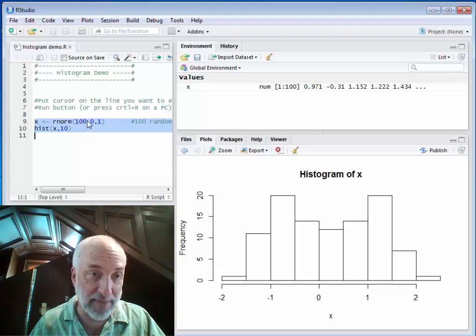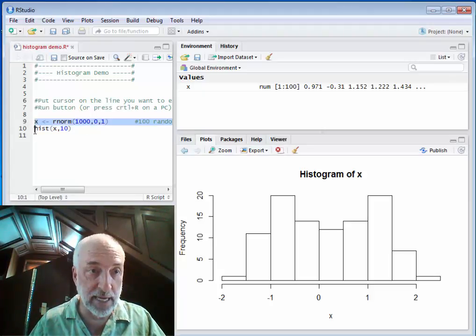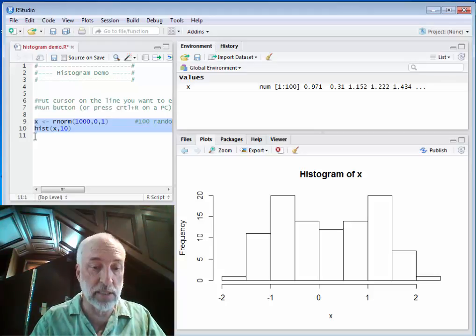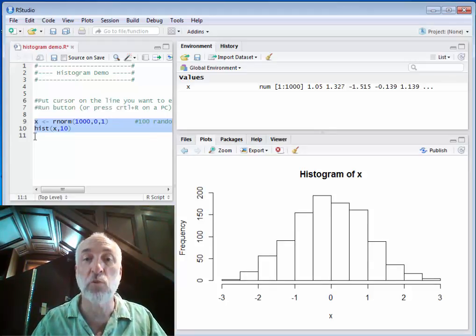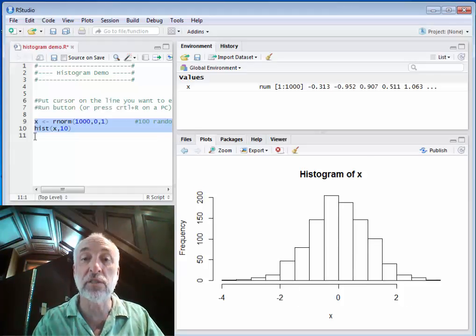Now, if we had a lot more data points, let me change this to 1,000 data points and run it again. Now we're going to see a much more symmetric, stable looking histogram.